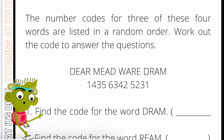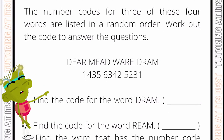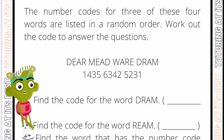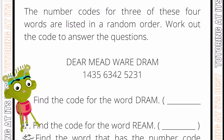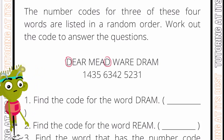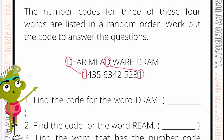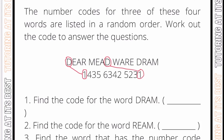To begin, we have the four words: dare, need, where, and dram. We need to work out the code for dram. The first approach is: D is in position one of 'dare' and in the last position of 'dram', and the number 1 is also in the first position and the last position — so that matches, meaning D equals 1. Now we need to get R, A, and M for dram.